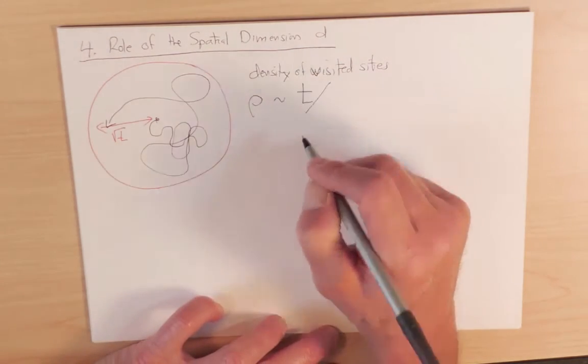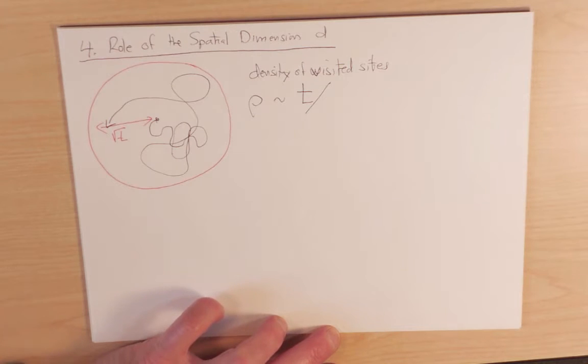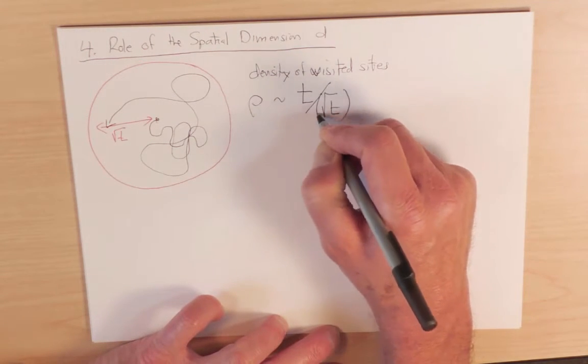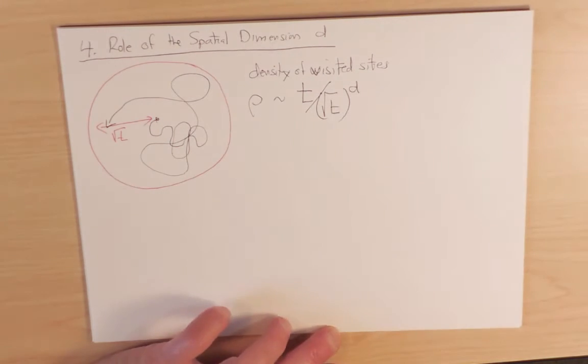And then we have to divide by the volume of the exploration sphere, which is its radius, which is square root of t, to the power dimension of space times some constant numerical factors that are relevant for this consideration.